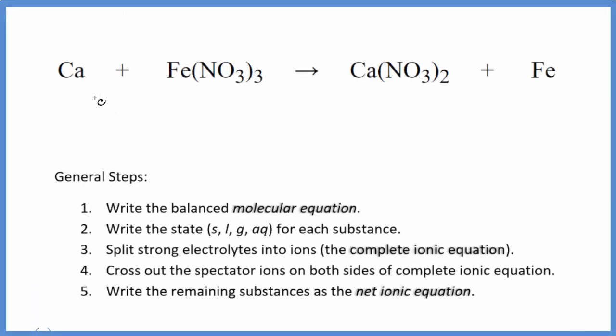In this video, we'll balance the net ionic equation for Ca plus Fe(NO3)3. This is calcium and iron(III) nitrate. This is a single displacement reaction. The calcium pushes the iron out, and the iron ends up by itself. The calcium is then bonded with the nitrate.